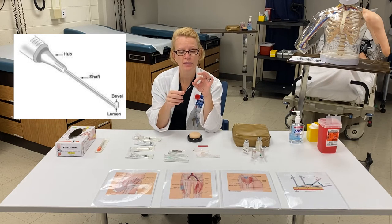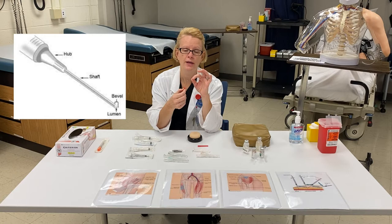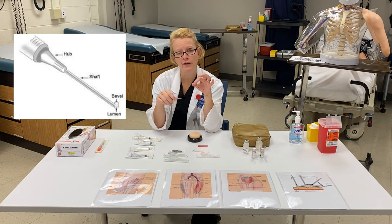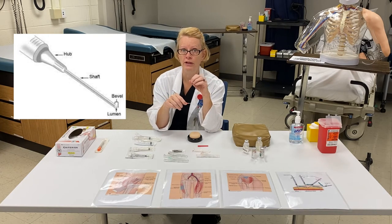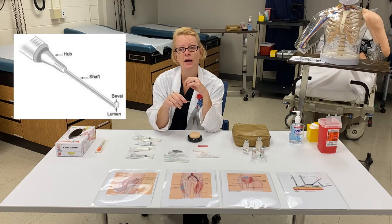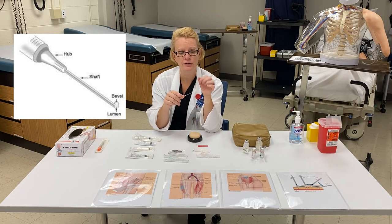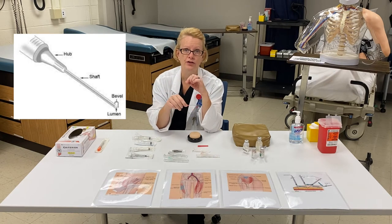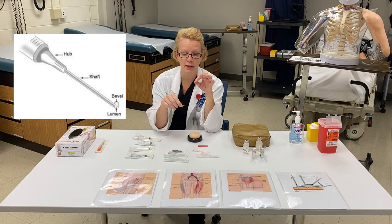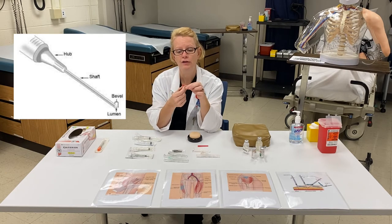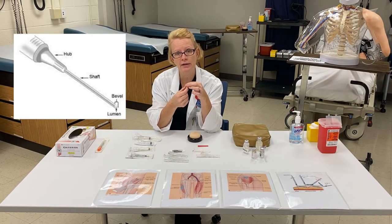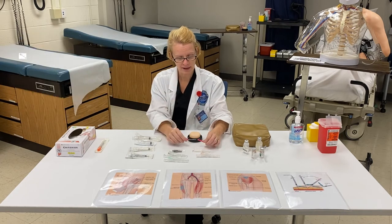When we are looking at our needles, we want to make sure that we notice which way the direction of the bevel is, because for some of our injections it's important that that bevel is in an upright position — especially if you think about giving an intradermal injection right under the skin. Those are our PPD injections. Or maybe if we're putting an IV into a patient and we want to put the angio catheter into the vein, we want to make sure that the bevel of that catheter is facing upright. So the anatomy of the needle is: the hub, the shaft, and the bevel.